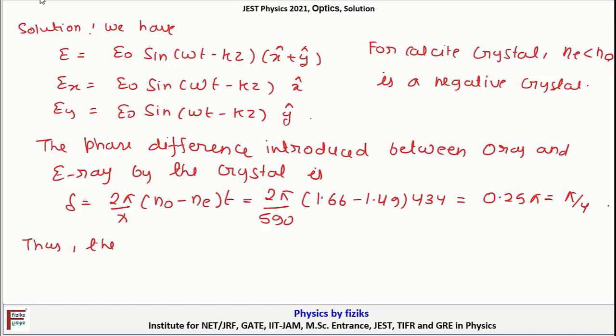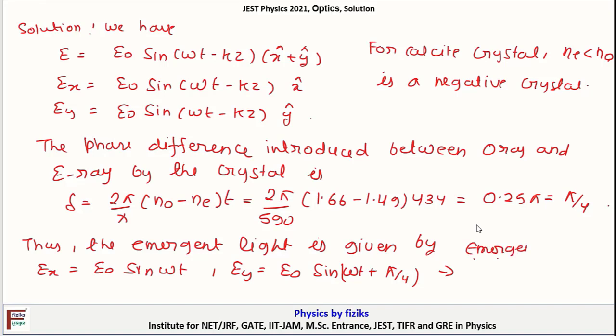The emergent light is given by Ex = E0 sin(ωt) and Ey = E0 sin(ωt + π/4). That means emergent light is elliptically polarized.